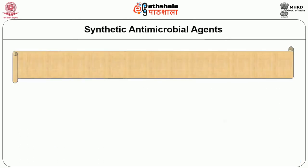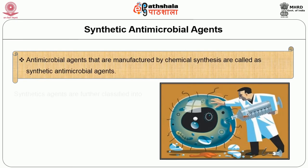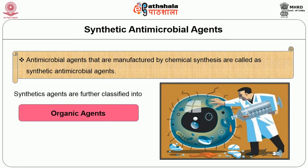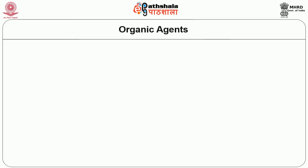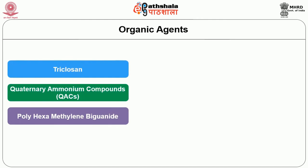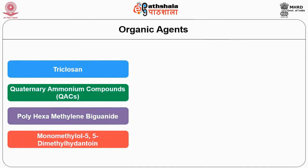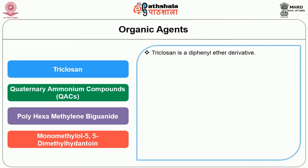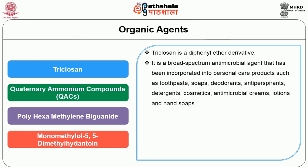Let us next learn about synthetic antimicrobial agents. Antimicrobial agents manufactured by chemical synthesis are called synthetic antimicrobial agents. Synthetic agents are further classified into organic and inorganic agents. Many organic compounds are used as antimicrobial agents including drugs and chemotherapeutic agents. The first example under organic agents is triclosan. Triclosan is a diphenyl ether derivative. It is a broad-spectrum antimicrobial agent that has been incorporated into personal care products such as toothpaste, soaps, deodorants, antiperspirants, detergents, cosmetics, antimicrobial creams, lotions and hand soaps.